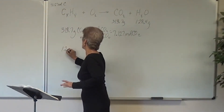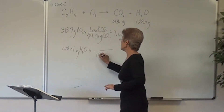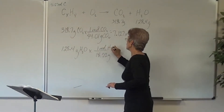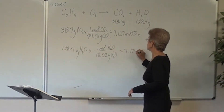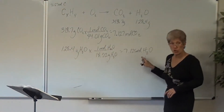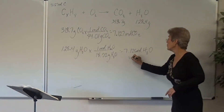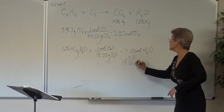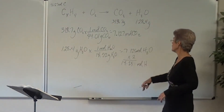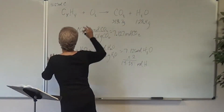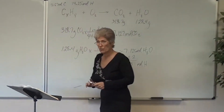Now for water: 128.4 grams of water times 1 mol / 18.02 g gives us 7.125 moles of water. Since there are two hydrogens in every mole of water, we multiply by 2 to get 14.25 moles of hydrogen — four significant figures. So we have 7.127 moles of carbon and 14.25 moles of hydrogen.